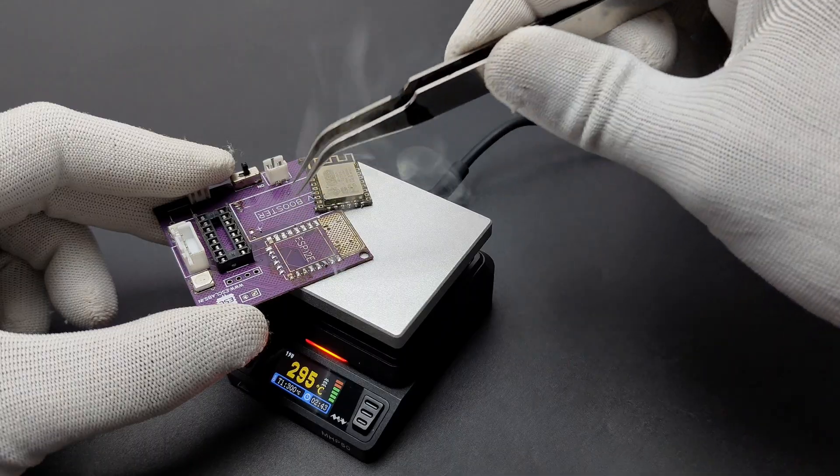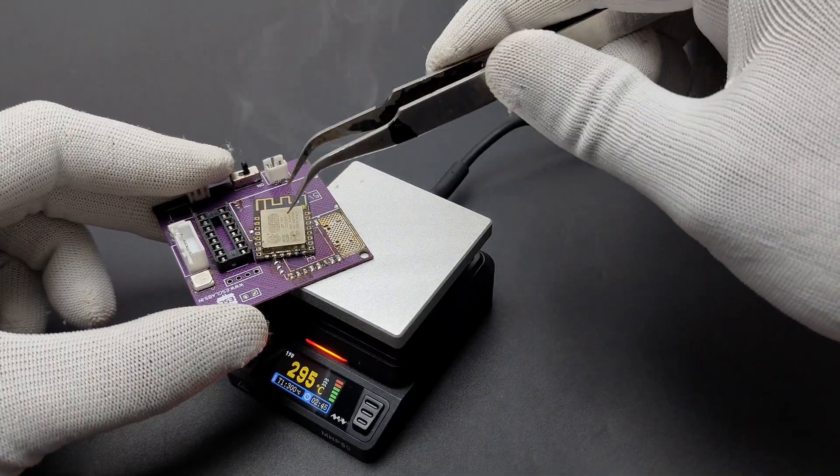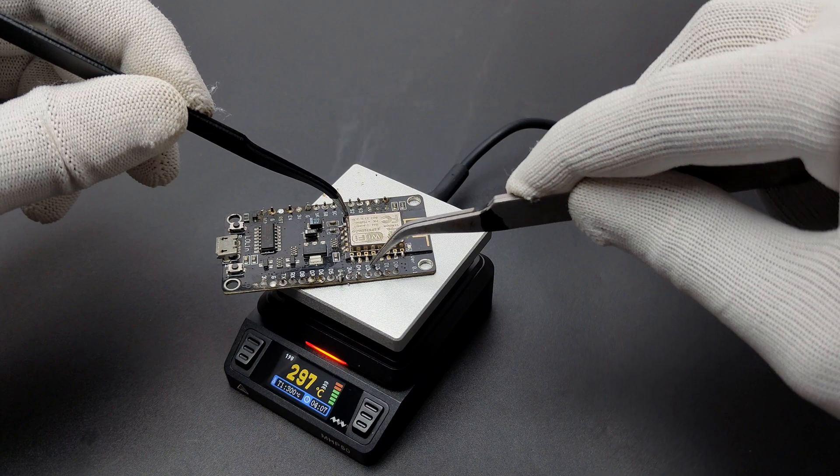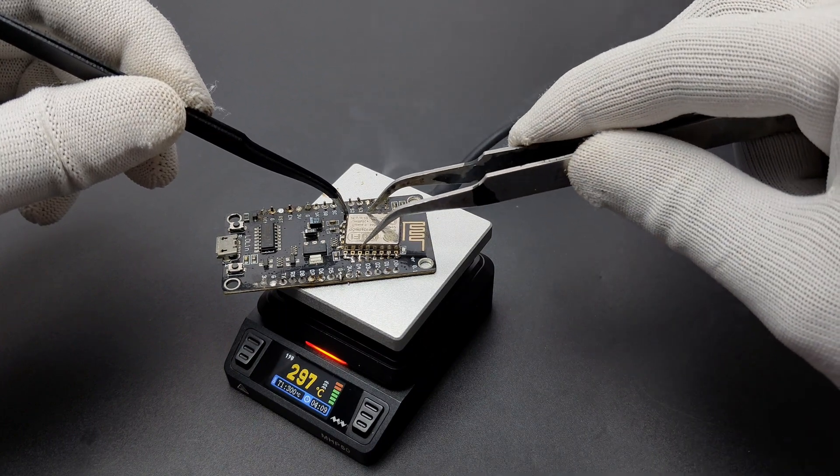Now you can see some reflow and desoldering using the MHP50. It takes only 150 seconds to reach 300 degrees Celsius from room temperature.